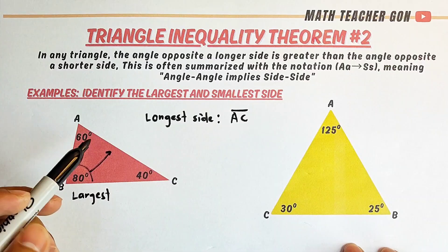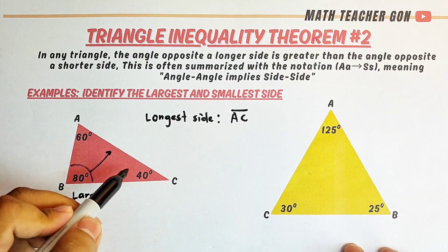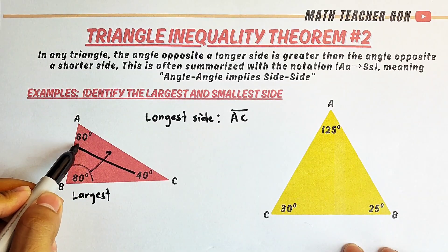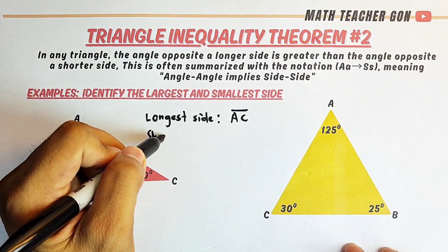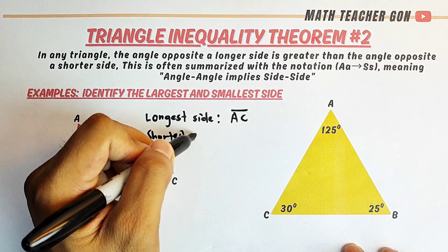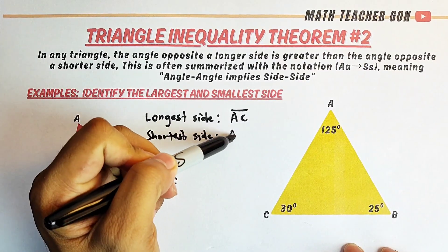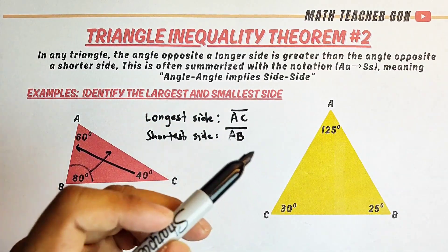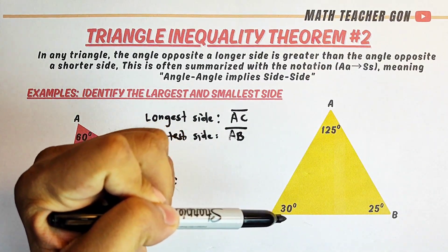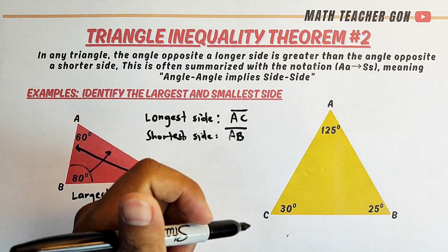For the shortest side, angle C at 40 degrees is the smallest angle, meaning the side opposite to it — side AB — is the shortest side. You can pause the video to figure out the longest and shortest side for the second triangle.